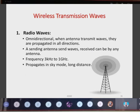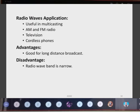Radio waves are omni-directional — when an antenna transmits waves, they propagate in all directions. Applications include multicasting, AM and FM radio, television, and cordless phones. Advantage: good for long-distance broadcast. Disadvantage: the radio wave band is narrow.